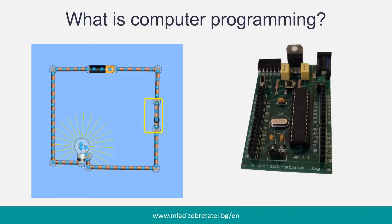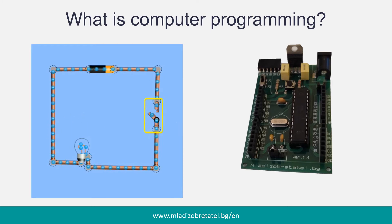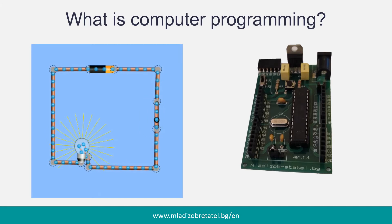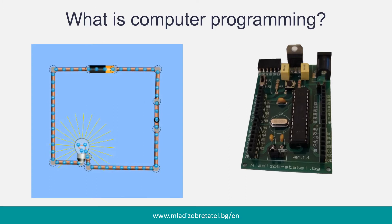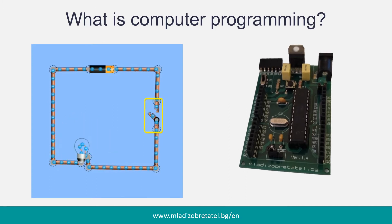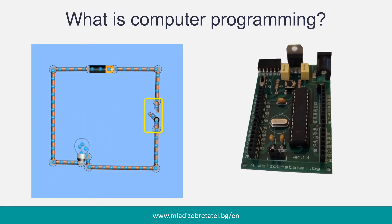Now imagine you want to turn on and off your lamp every 2 seconds, just like Christmas lights. For this purpose we will program a microcontroller. Don't freak out yet — for our training purposes we will call it a small computer for now. On the right side you can see how our computer looks like.